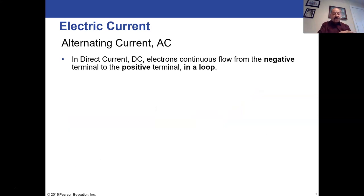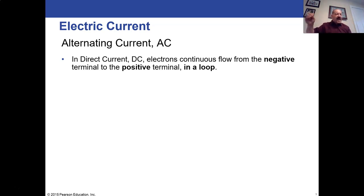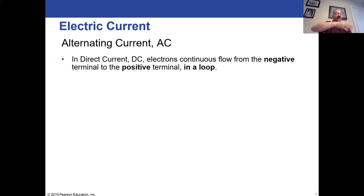There are two main kinds of current: AC, which stands for alternating current, and DC, which stands for direct current. In direct current, electrons are always flowing in the same direction — since they're negatively charged, they flow from the negative terminal of the battery toward the positive terminal. The battery adds energy to them, and they do another loop around, always in the same direction from negative to positive.